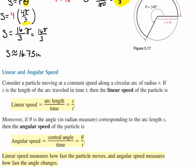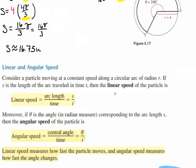Let's talk about linear and angular speed. Consider a particle moving at a constant speed along a circular arc of radius r. If S is the length of the arc traveled in time t, then the linear speed of the particle is the arc length divided by the time, or S divided by t. We know what S is because S is r times theta.